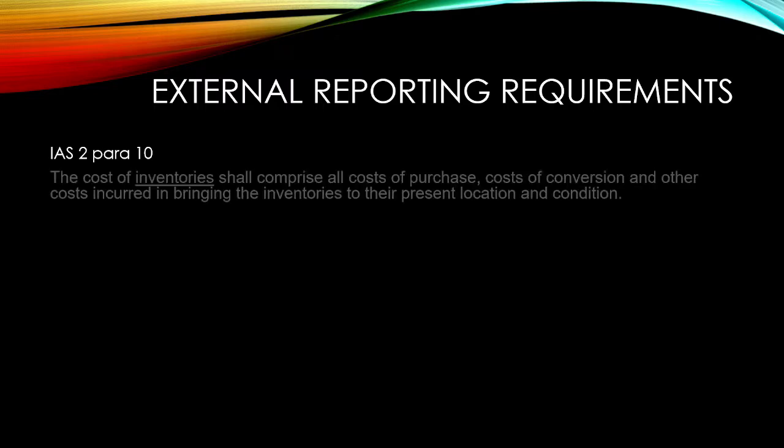First up is IAS 2, paragraph 10. This paragraph identifies all costs of purchase, costs of conversion, and other costs to bring the inventory to its current location and condition as forming part of the cost of inventory. When considering absorption and variable costing, we are most concerned with the treatment of conversion costs, particularly the overheads.